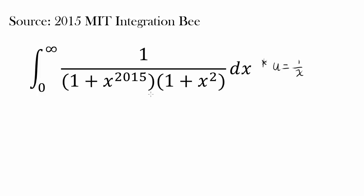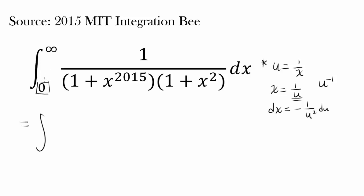Let's try u equals 1 over x and see if we can make any useful changes. We know x equals 1 over u, so dx equals negative 1 over u squared du. Now let's change the bounds: when x approaches 0 from positive values (0.1, 0.01, 0.001), u equals 1/x approaches positive infinity (10, 100, 1000). So x equals 0 corresponds to u equals infinity.